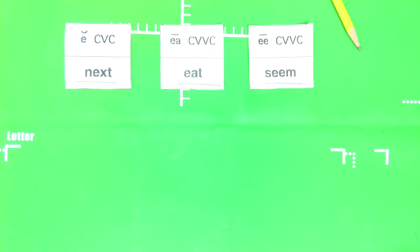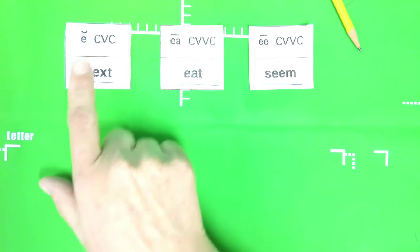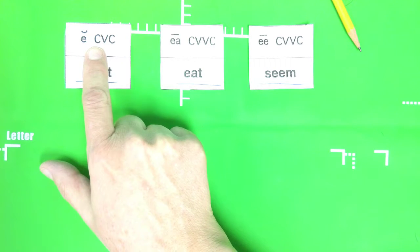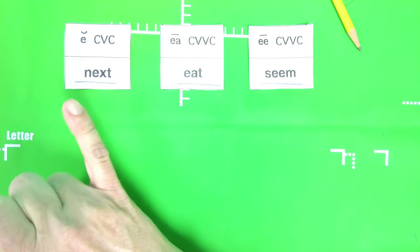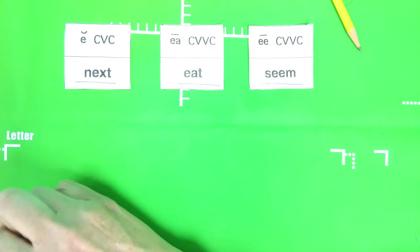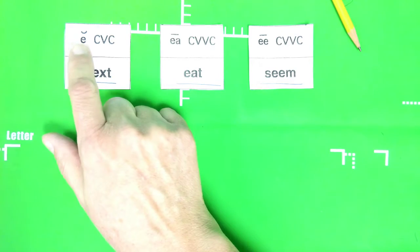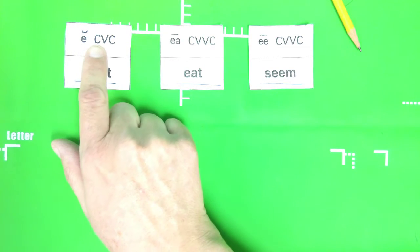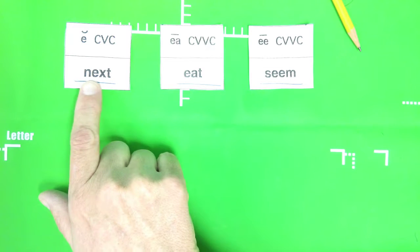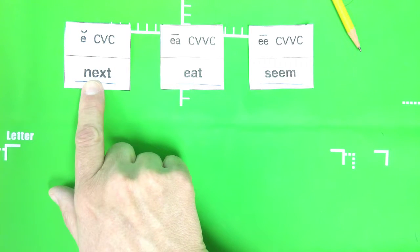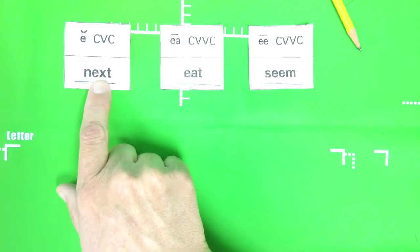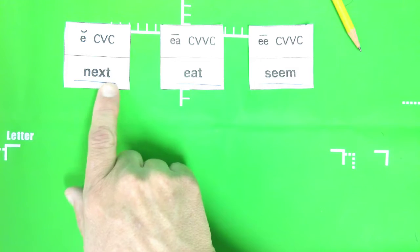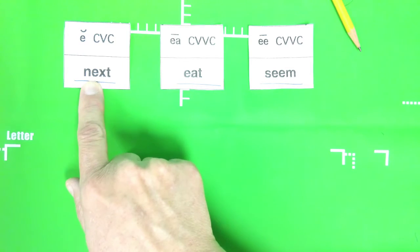All righty, so now we're ready to sort our words. Let's look at what we have this week. We are looking at a consonant vowel consonant word, and actually the vowel we're working with this week is E. So we're looking at the short vowel sound of E, which is 'eh'. If you have a consonant vowel consonant, the E in the middle will be a short vowel sound. So if you look at next, consonant vowel consonant, and when you say it, next, you hear the short vowel sound.